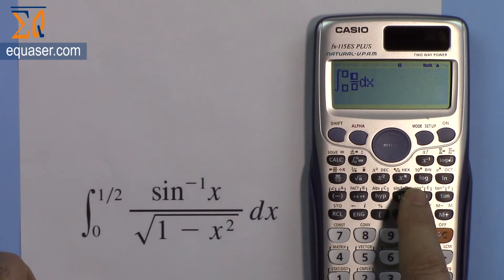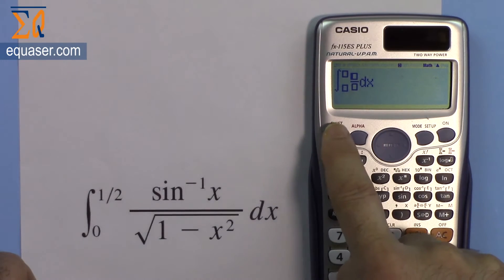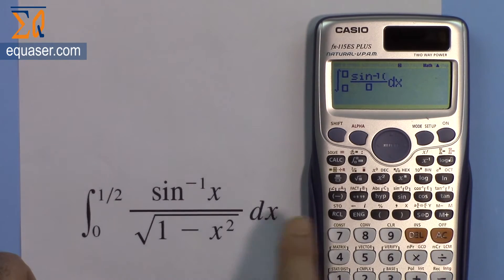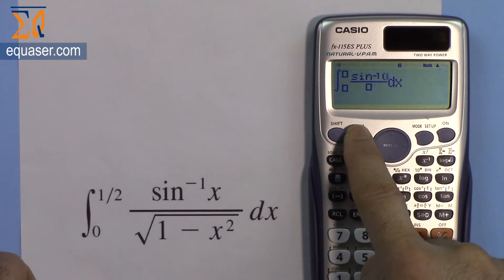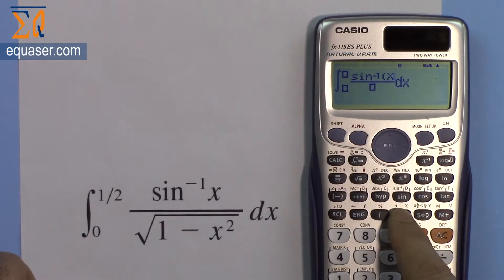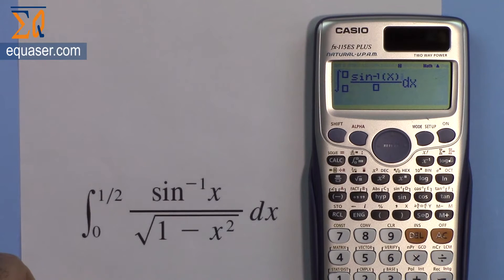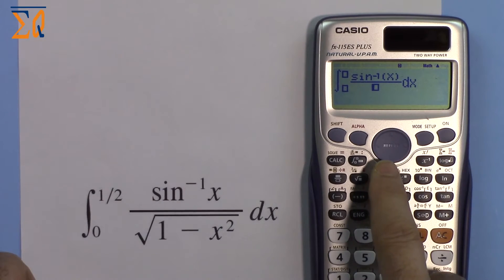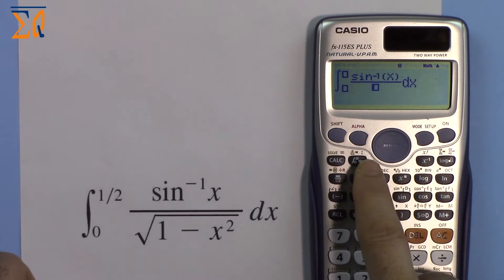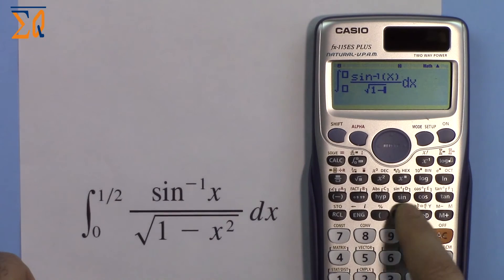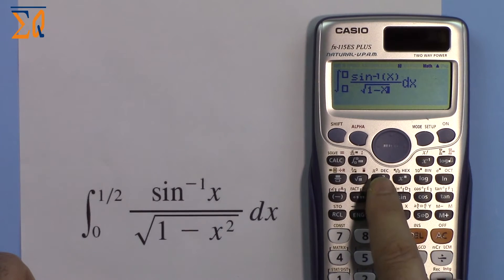So inverse sine of x. The sign for inverse—we press shift, sine inverse, and then x, alpha x like before. And now this x has a parenthesis so I have to close it, as you can see there. And then go to the denominator by pressing the lower arrow key, and then square root 1 minus x squared.